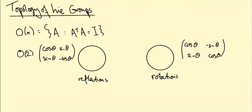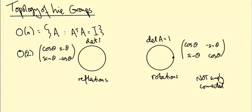That's the formula for a reflection around a line that makes an angle θ/2 with the x-axis. So that's all of the orthogonal matrices in two dimensions - the group looks like two circles. When you talk about whether a group is simply connected or not, you talk about loops that go through the identity. The identity is in the rotation component, and it's certainly not simply connected because you can have a loop that goes around this circle as many times as you like.